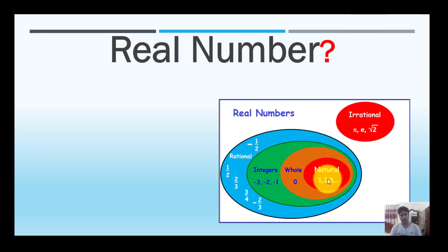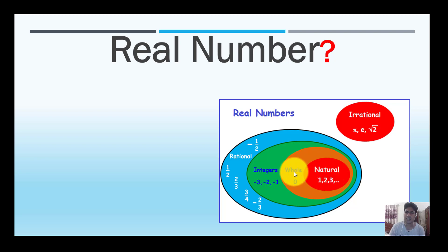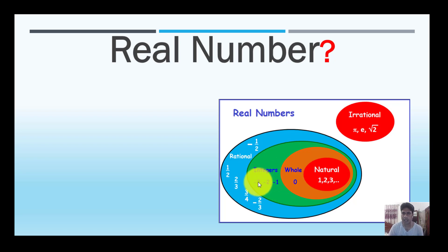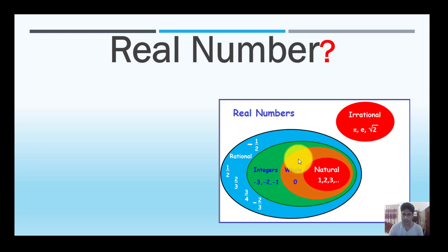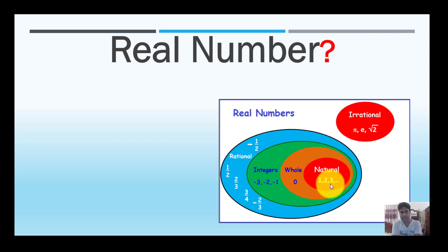The natural numbers are 1, 2, 3, 4, 5. Zero may or may not be included in the natural numbers. The integers include these values. For example, 2, 3, 5 are part of the number system — the total set of numbers including fractional numbers.